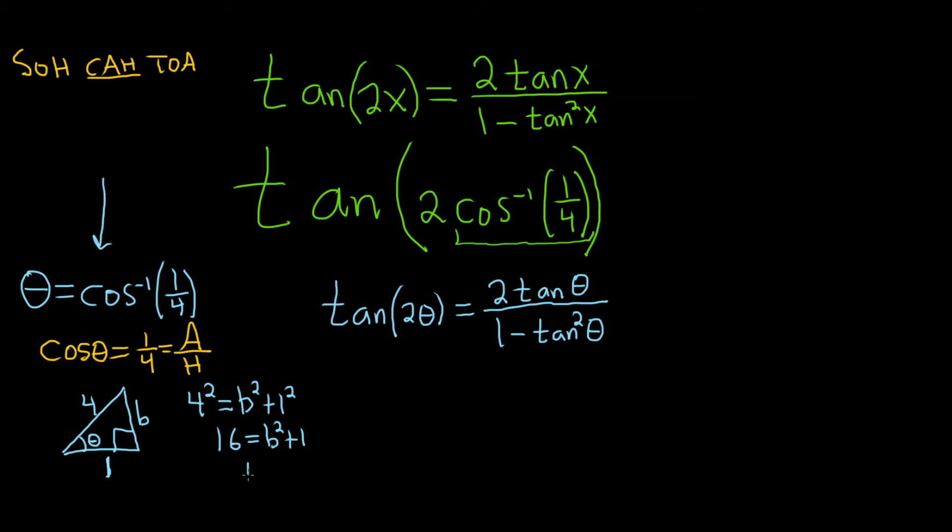So that means that B squared is equal to 15, because you can subtract 1. Taking the square root, we get plus or minus the square root of 15. So here B is the square root of 15. So I'm going to come back over here and fill it in. The square root of 15. Now we should be able to finish our problem.